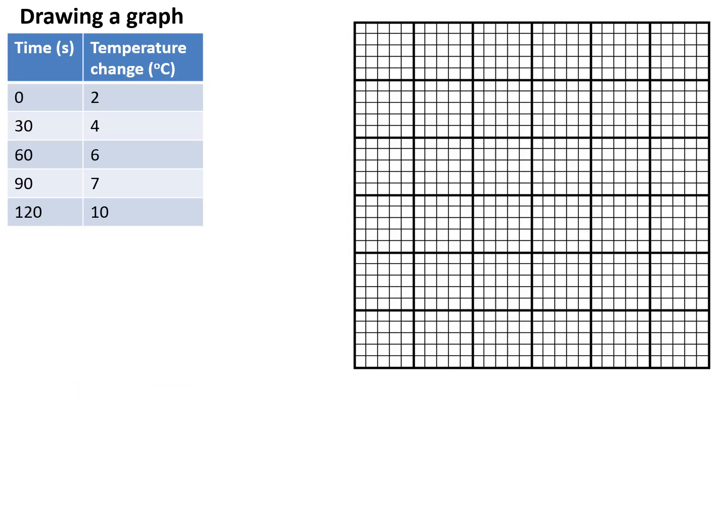You have a table with time in seconds and temperature in degrees Celsius. Time is your independent variable because you've decided to take readings every 30 seconds. Temperature is what you measure - the dependent variable. We'll look at how to plot this graph and score maximum marks in an exam.